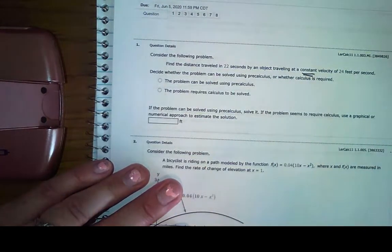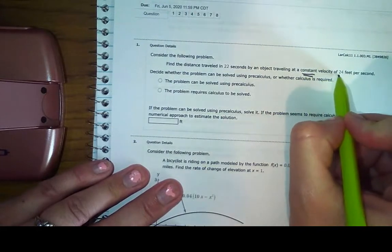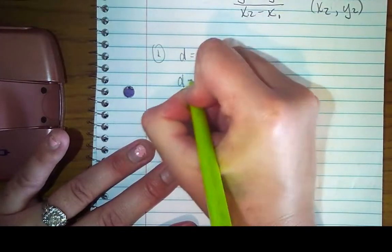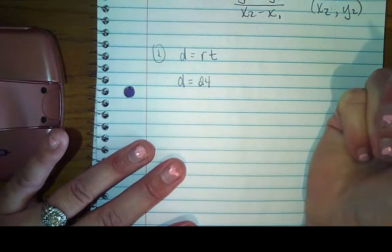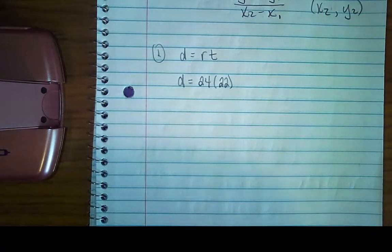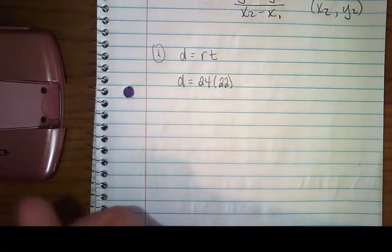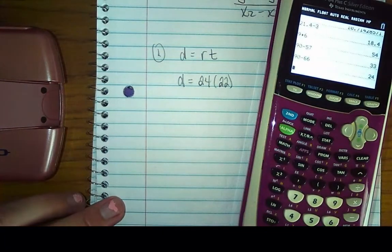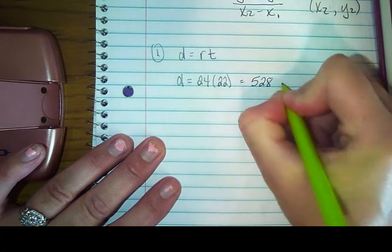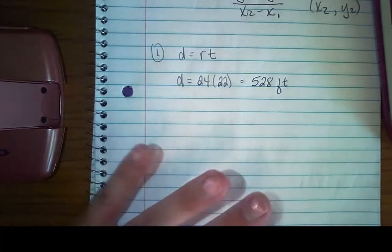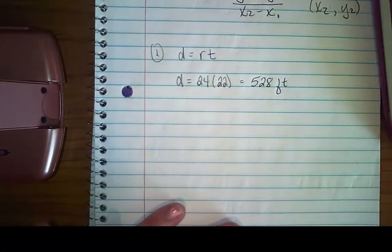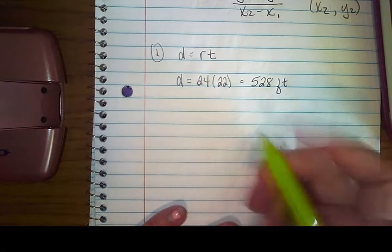So I know that distance equals rate times time. Well, it says find the distance traveled in 22 seconds. There's your time. Traveling at a constant. So you'll notice constant there. Constant velocity of 24 feet per second. So since it's a constant velocity, that means it is unchanging. So I've got distance equals 24 feet per second, that's your rate, and then your time is 22 seconds. So 24 times 22 is 528. So the distance traveled is 528 feet.